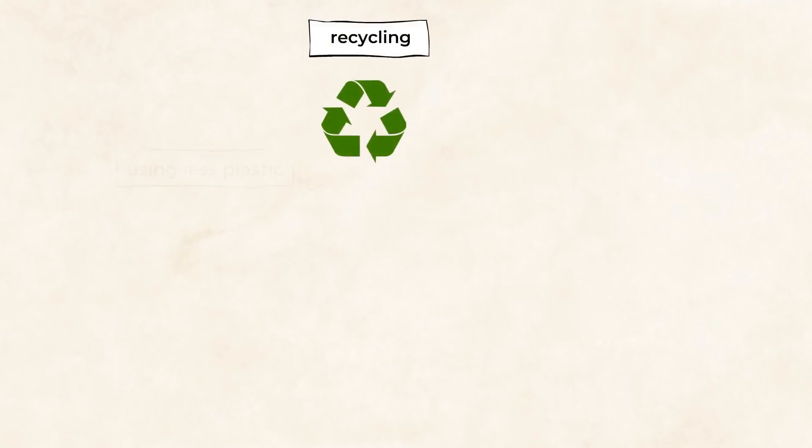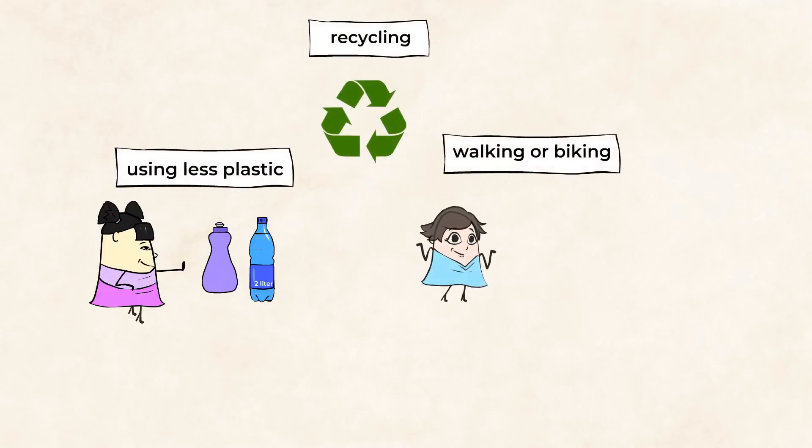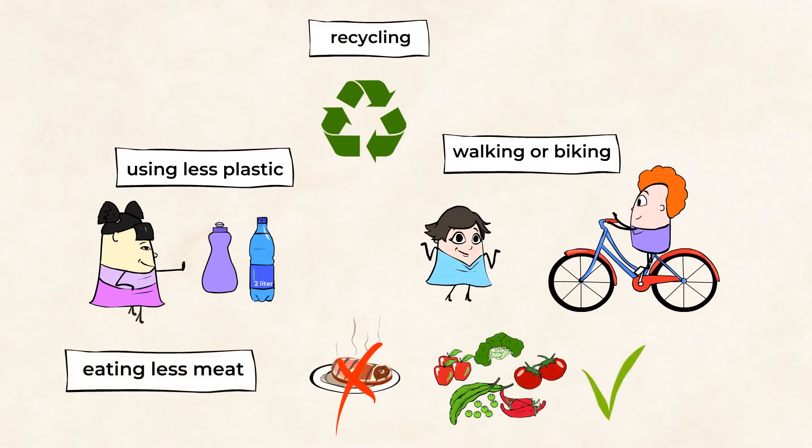Things like recycling, using less plastic, walking or biking instead of driving a car, eating less meat. All of these are great examples of ways that people can help limit pollution.